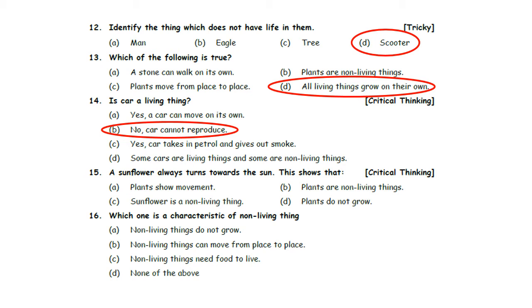Fifteenth one: A sunflower always turns towards the sun. This shows that — Option A: Plants show movement. Option B: Plants are non-living things. Option C: Sunflower is a non-living thing. Option D: Plants do not grow. Whenever the sun rises, the sunflower turns towards the sun. It shows that plants show movement. So, Option A is the correct answer.